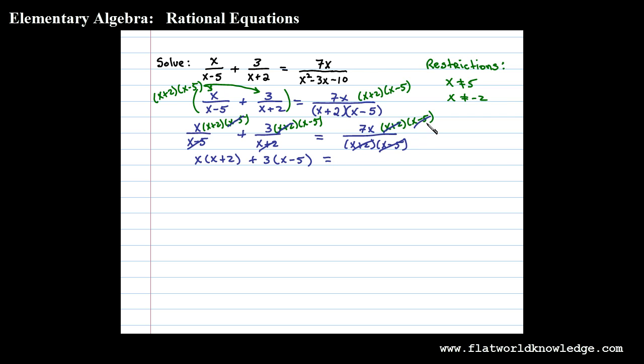Now on the right side both of these factors cancel leaving us with 7x. Multiplying both sides by the LCD clears the fractions. Now we have a quadratic equation that can be solved as usual. First we distribute the x which leaves us with x squared plus 2x, then distribute this 3 so plus 3x minus 15.